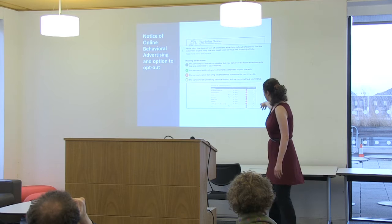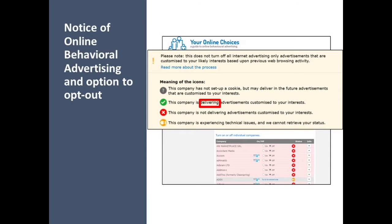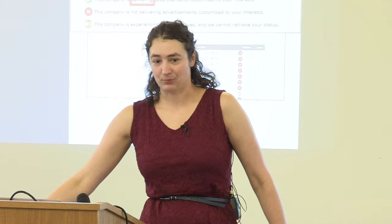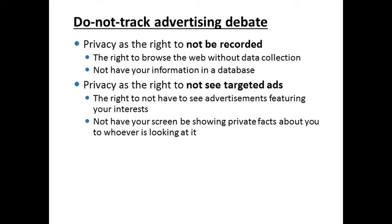If you go to that icon's page, it tries to explain all your choices involving advertising. A key word in this interface is 'delivering' — it says the company is 'delivering advertisements customized to your interests.' Why are they using 'delivering' and not 'tracking'? The answer comes back to the two definitions of privacy. Privacy fundamentalist groups sit on the first definition: privacy is the right to not be recorded, the right to control what information companies collect.